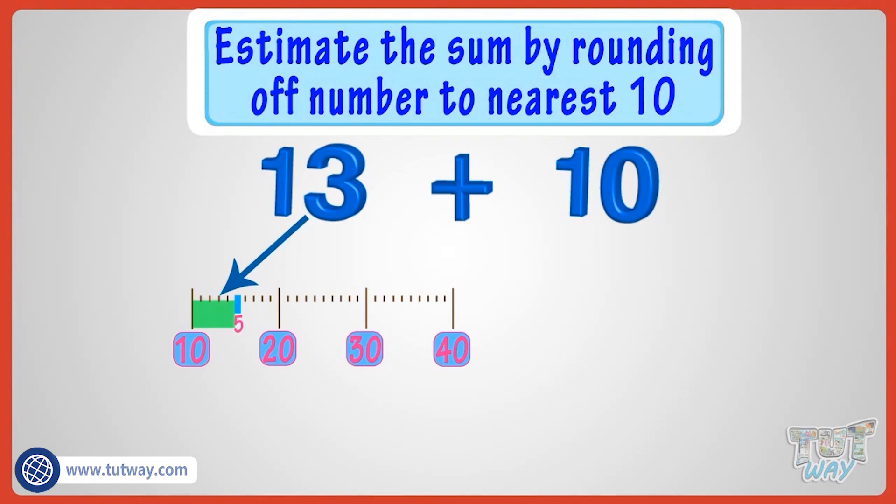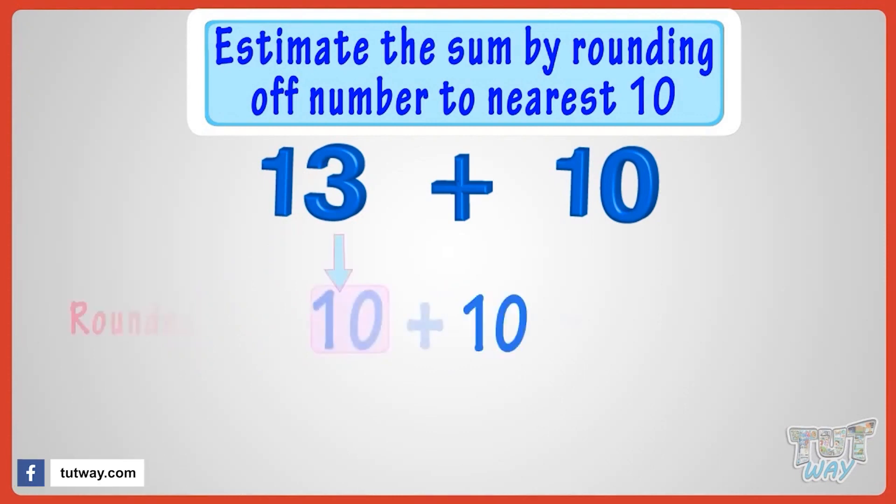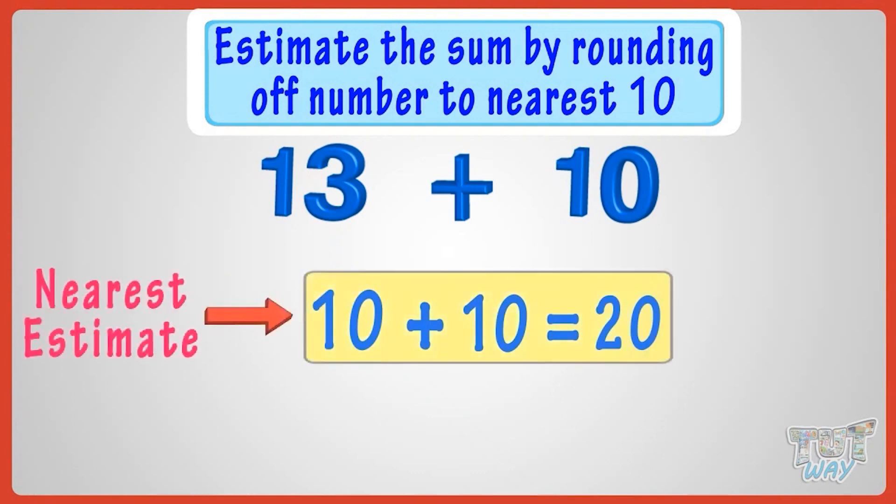Now, add the rounded off figures to calculate the estimate. Ten plus ten equals twenty. So the nearest estimate of thirteen plus ten is twenty.